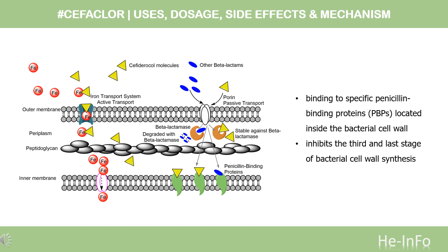Mechanism of Action: Cefaclor, like the penicillins, is a beta-lactam antibiotic. By binding to specific penicillin-binding proteins (PBPs) located inside the bacterial cell wall, it inhibits the third and last stage of bacterial cell wall synthesis. Cell lysis is mediated by bacterial cell wall autolytic enzymes such as autolysins. It is possible that Cefaclor interferes with an autolysin inhibitor.